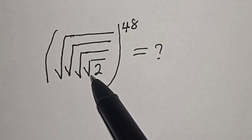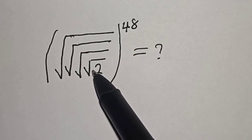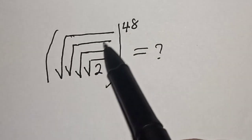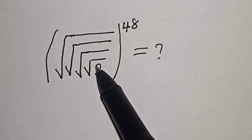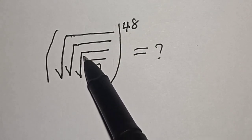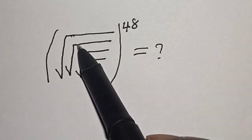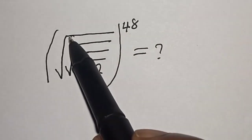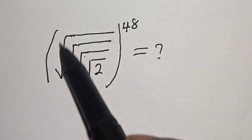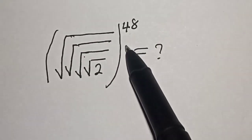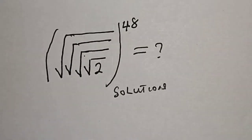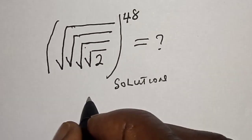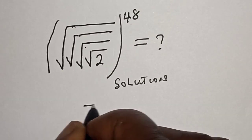Hello, welcome to Magis. In this class, we quickly want to evaluate this math problem: the square root of 2, with another square root, another square root, and another square root, all raised to the power 48.